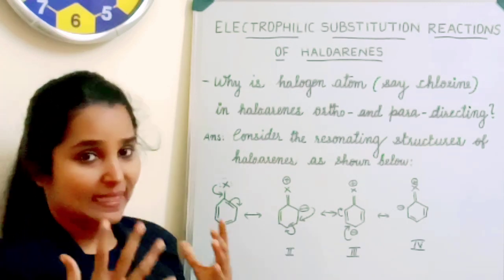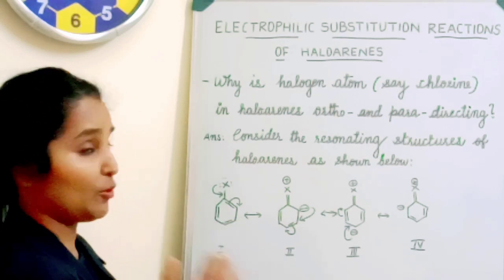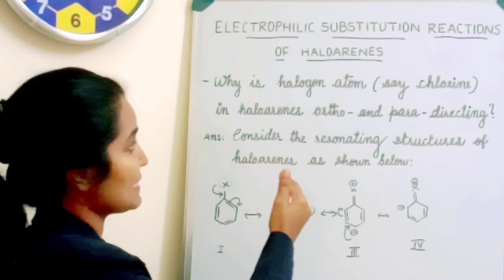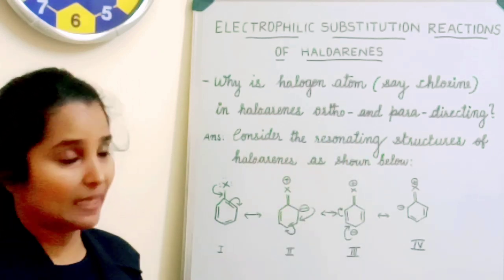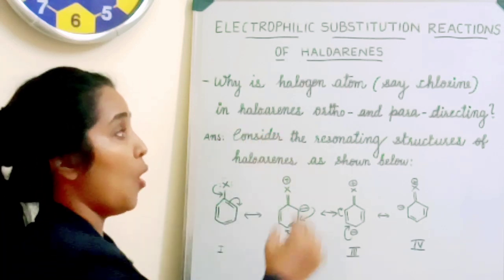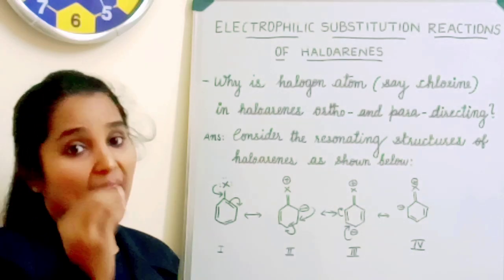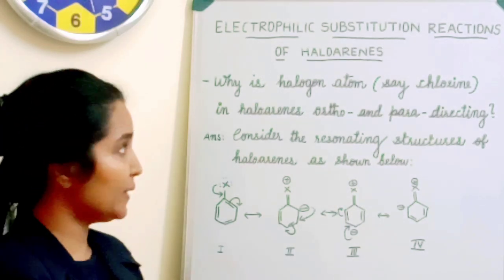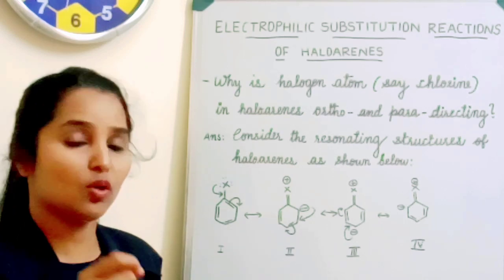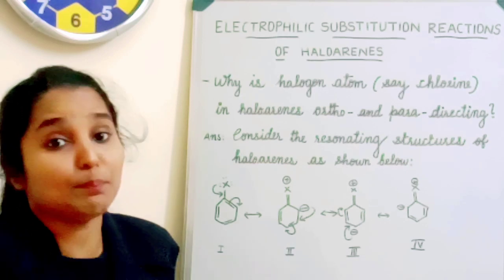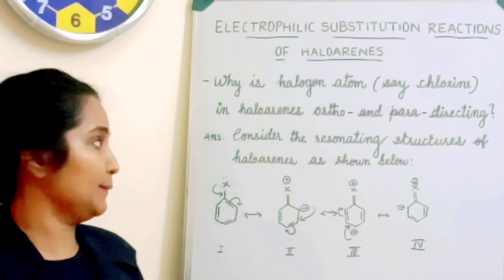There is an important effect regarding this particular portion. The question is: why is halogen — say chlorine, for example — in haloarenes, ortho and para-directed? When a haloarene undergoes electrophilic substitution, why does the electrophilic attack occur at the ortho or para position? Why is the halogen atom in haloarenes ortho-para directed? That is the question.